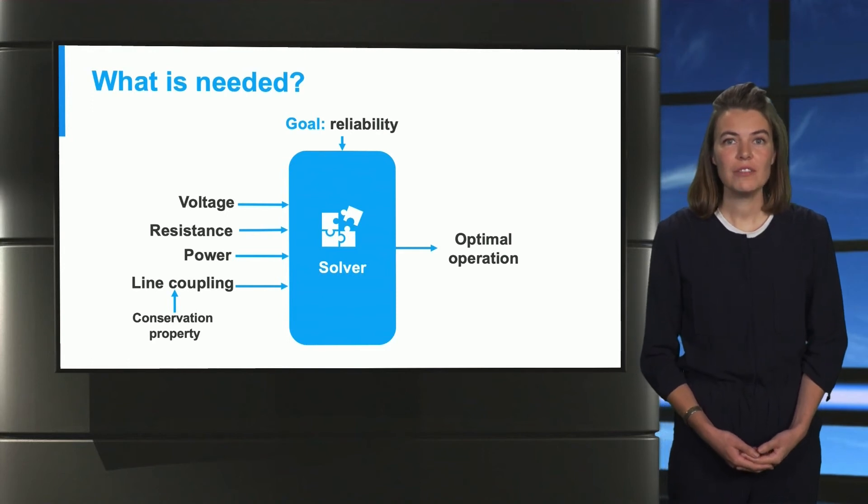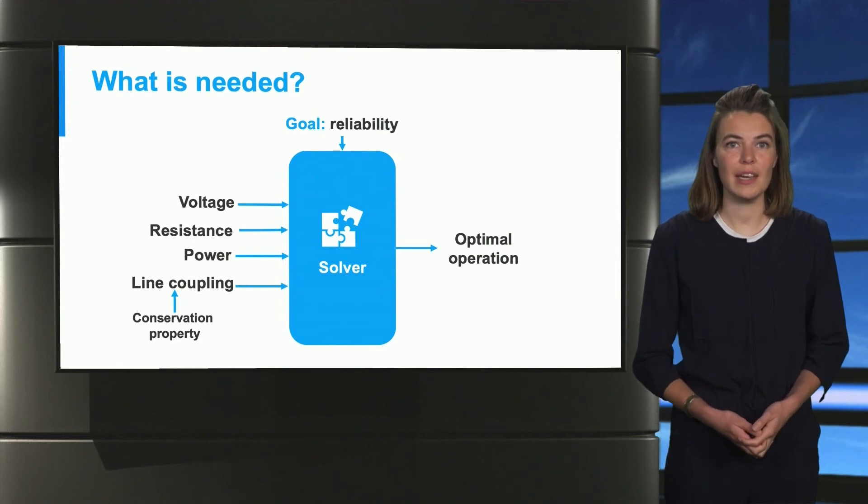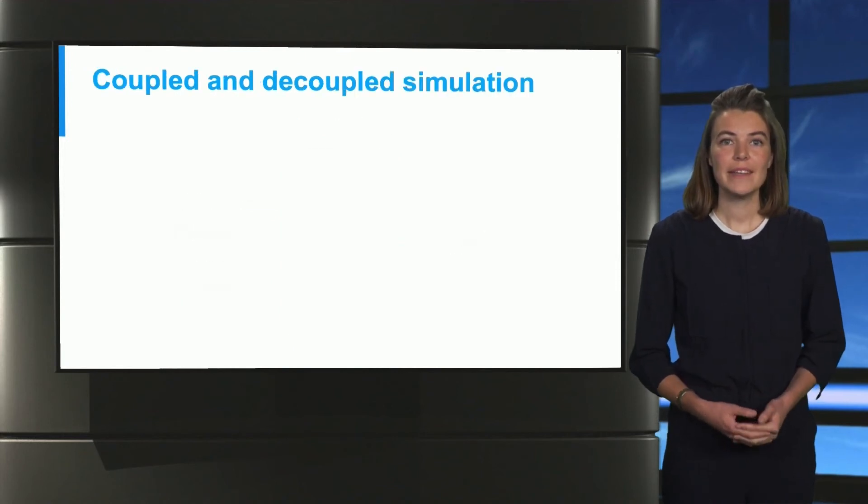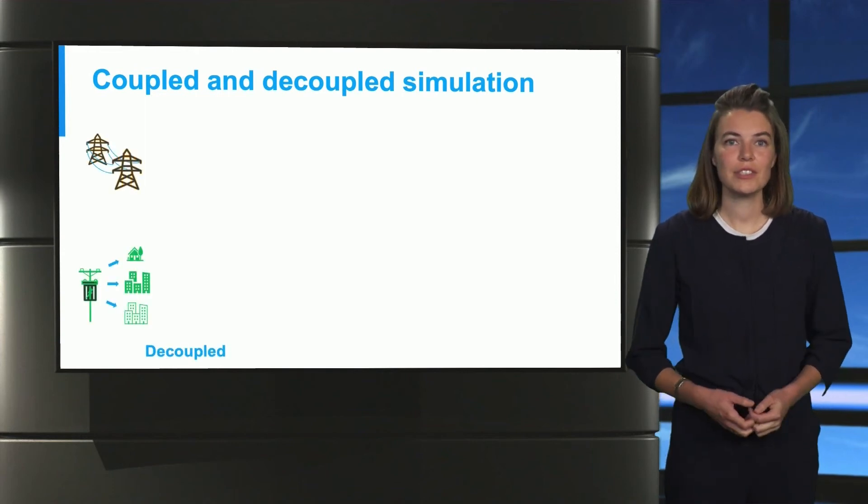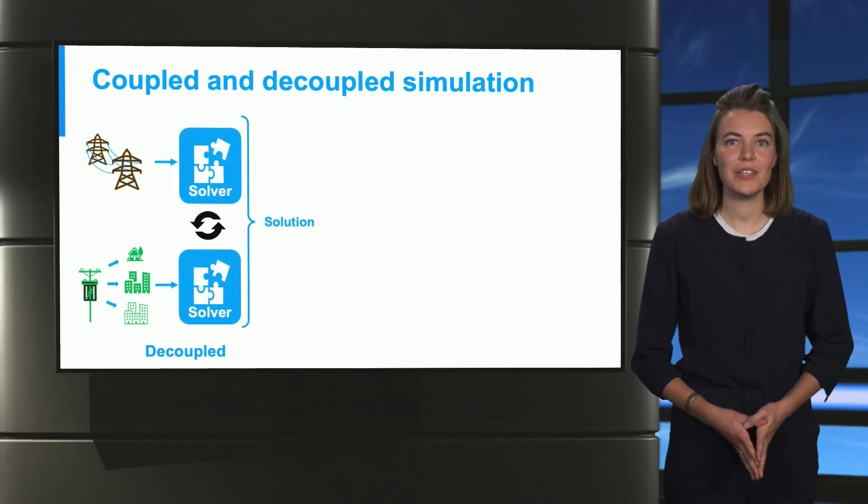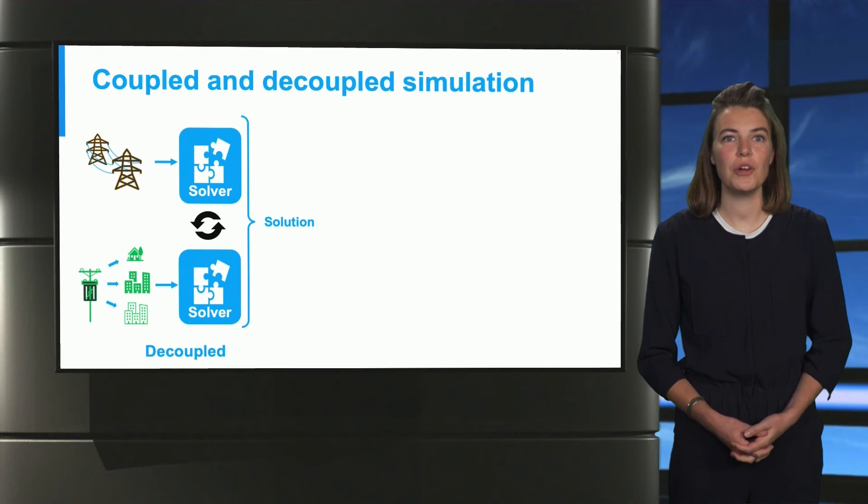We already have such a solver for the individual networks, but how can we simulate both networks together? There are two approaches we can use, and let's start with a decoupled one.